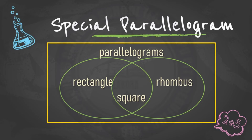Special parallelograms — based from the definition, the rectangle, the rhombus, and a square are parallelograms. And thus, they inherit the properties of a parallelogram, wherein it has two pairs of congruent sides. Aside from that, we can also state that a square is both a rectangle and a rhombus.